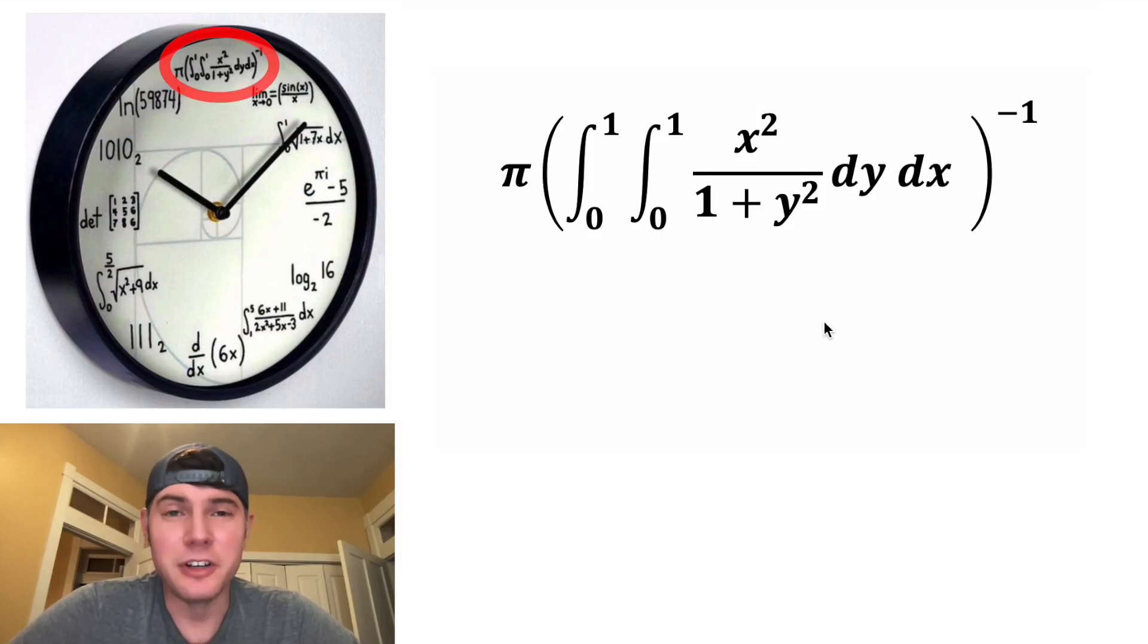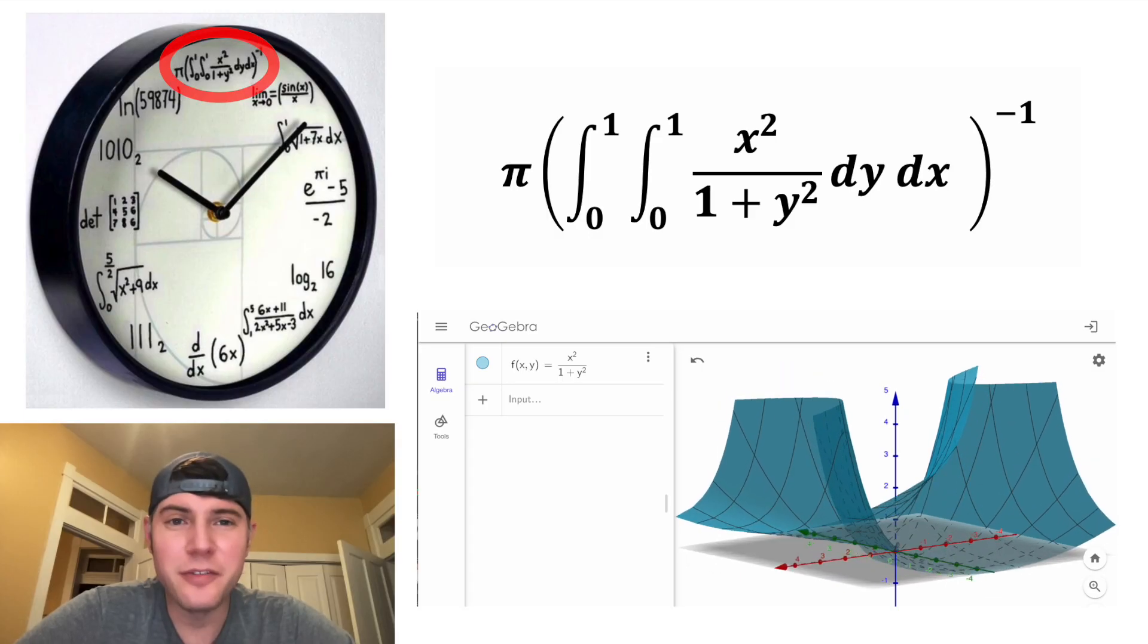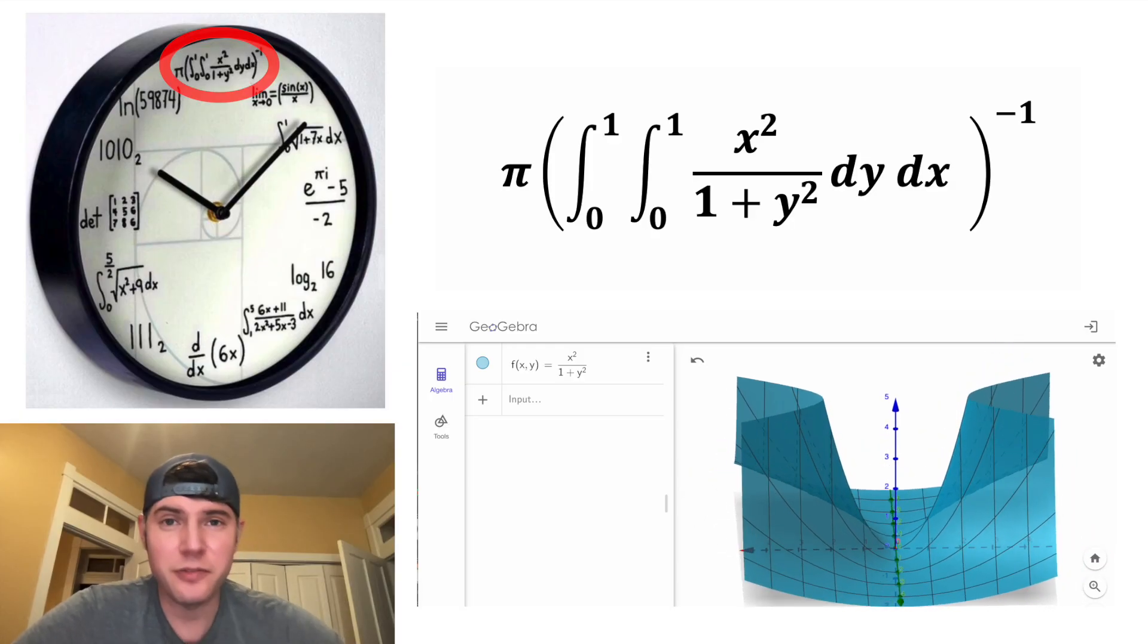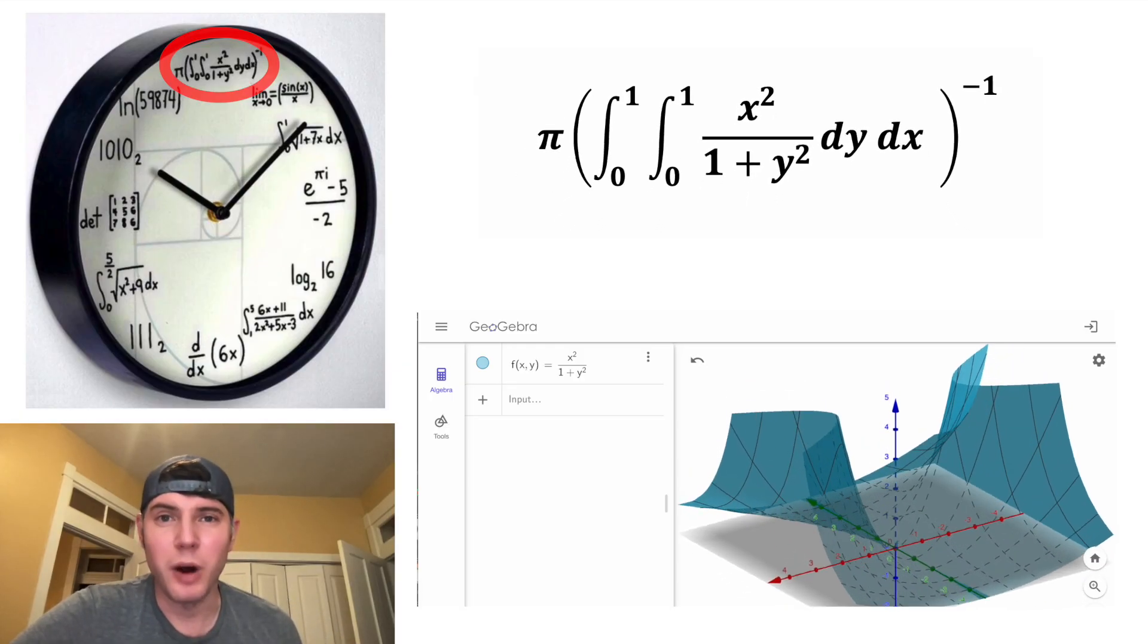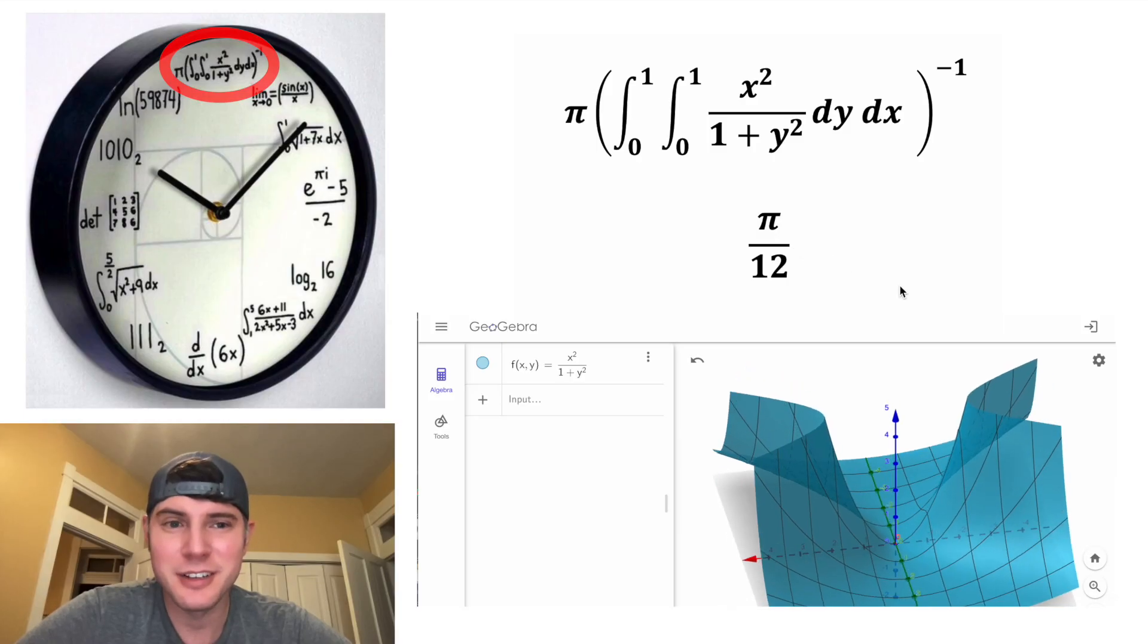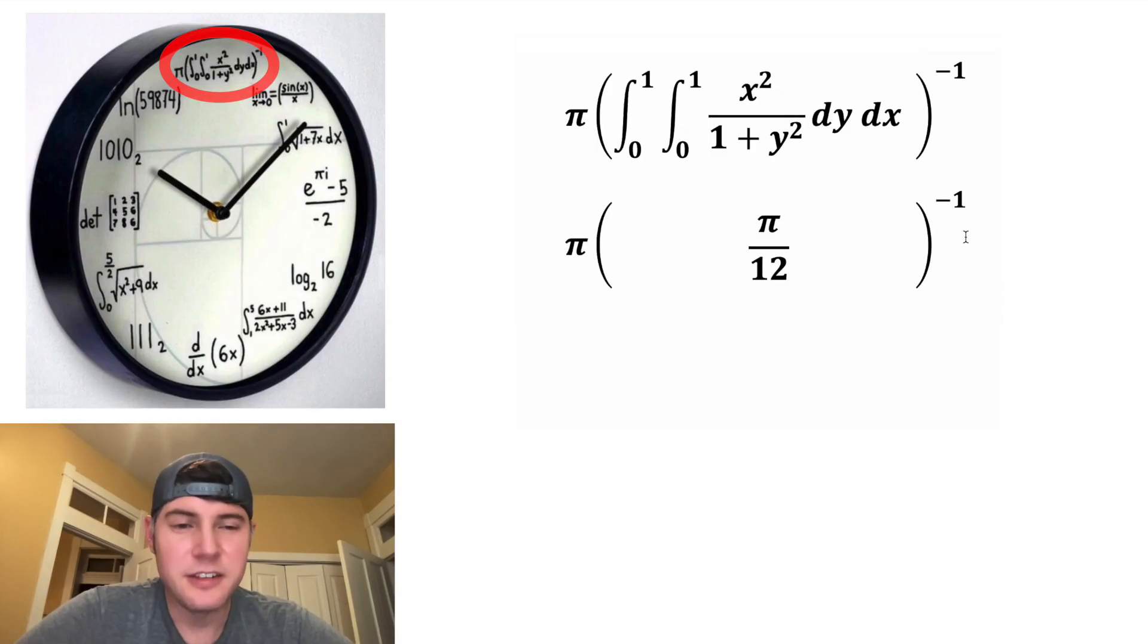And last, they have this double integral right here. If we graph f of xy equals x squared over one plus y squared, it means what is the volume underneath this graph for x between zero and one, and y between zero and one? The volume is exactly pi over 12. And if we bring down the rest of this stuff, this negative one exponent means take the reciprocal, and then these two pies cancel each other out, leaving us with just 12. And that's why this formula represents the 12 o'clock hour.